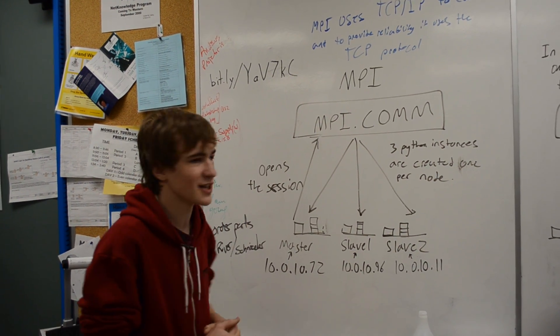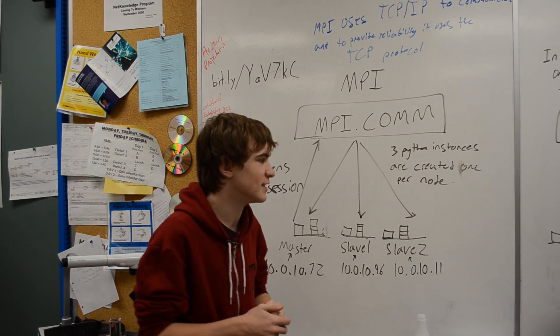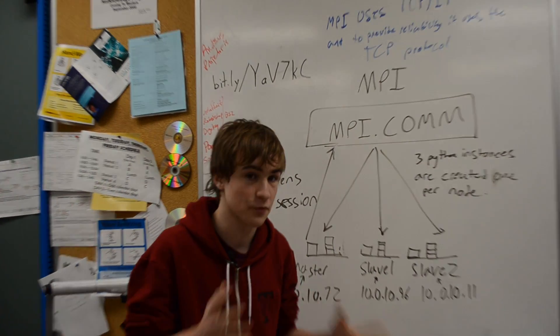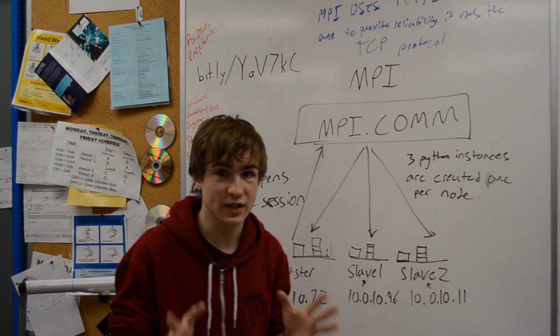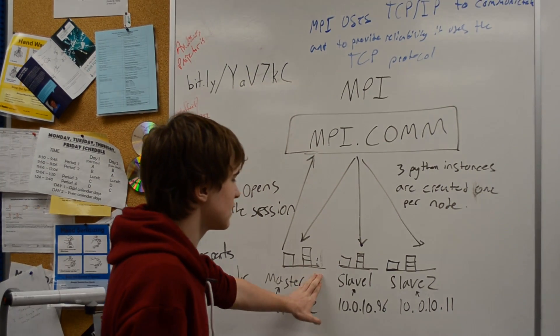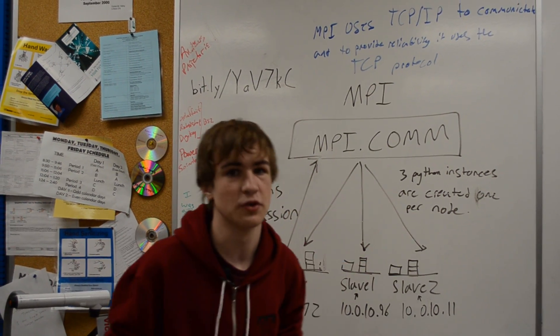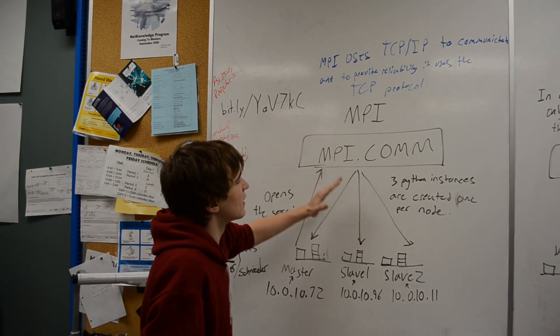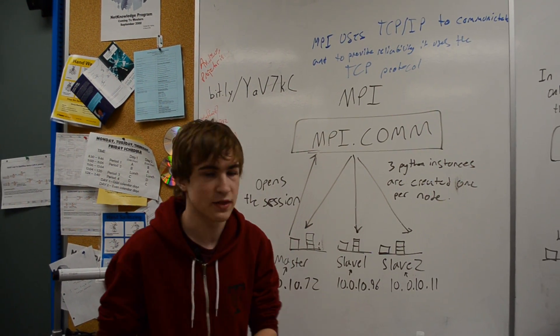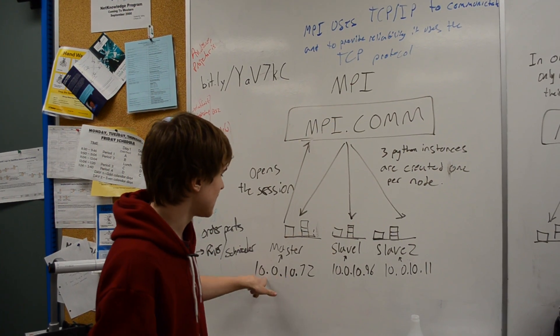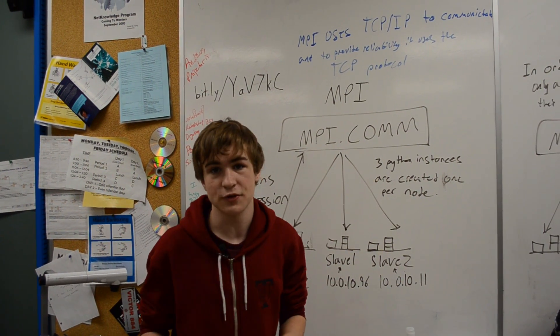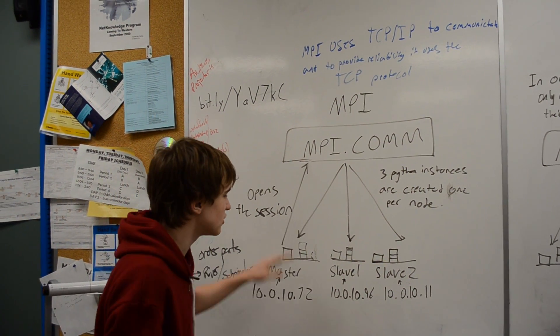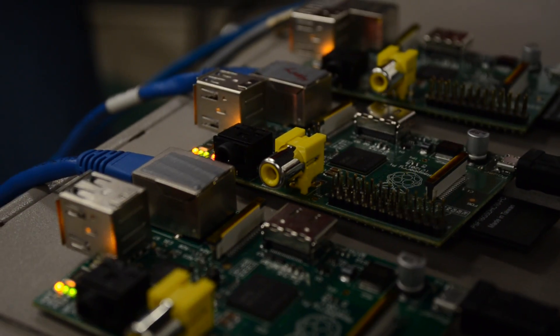So, the communicator essentially starts three Python instances, which is the programming language that we're using, or three Python processes, each on the operating system of each of the three computers that we have. So, this initializes the communication, and then each one receives a Python instance. And this happens through IP addresses, it assigns, it SSHs each one of them, and uses that in order to start the processes.